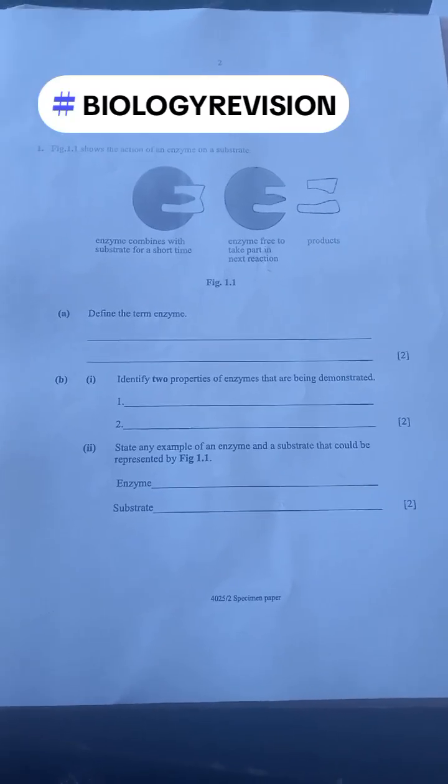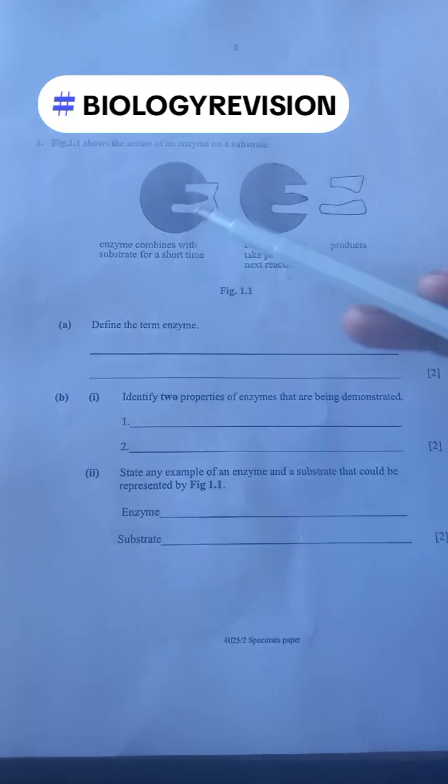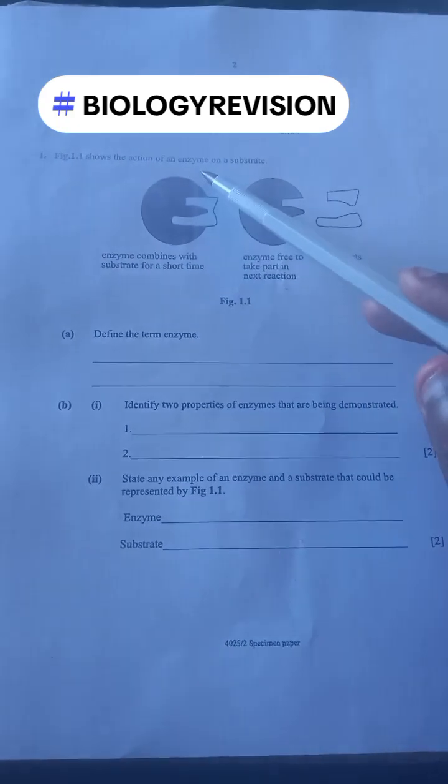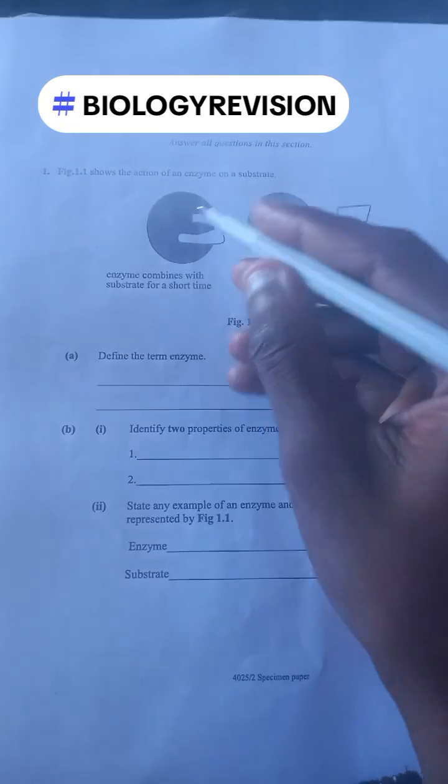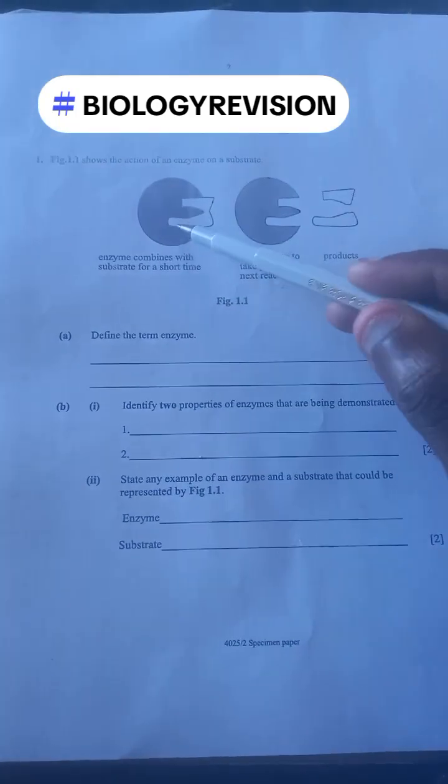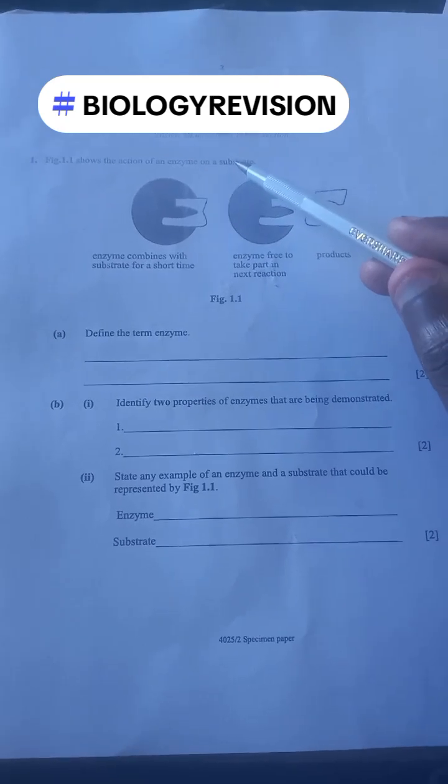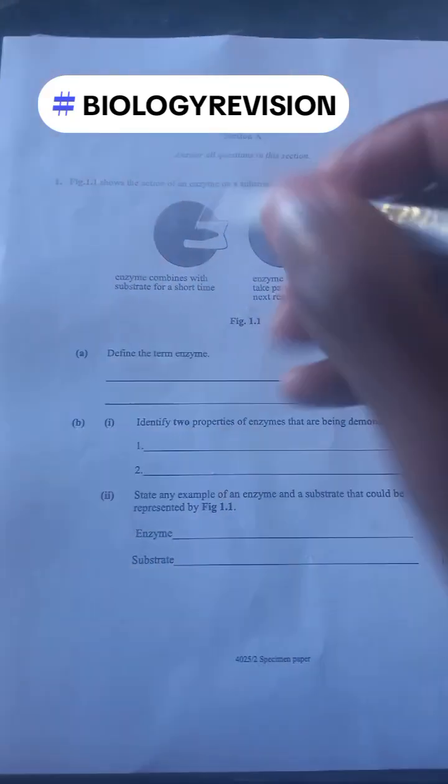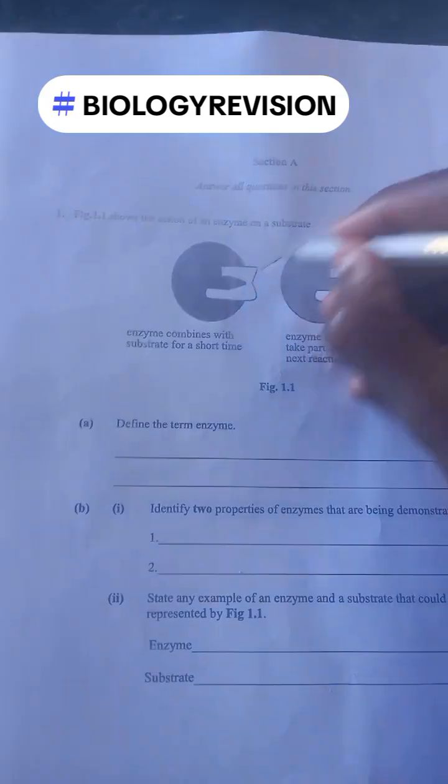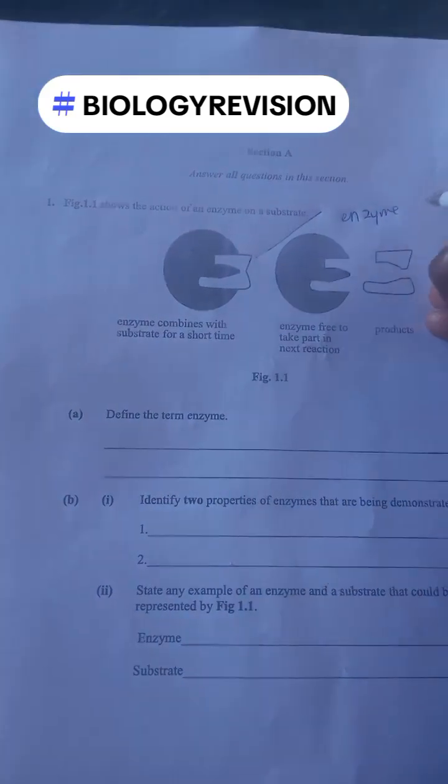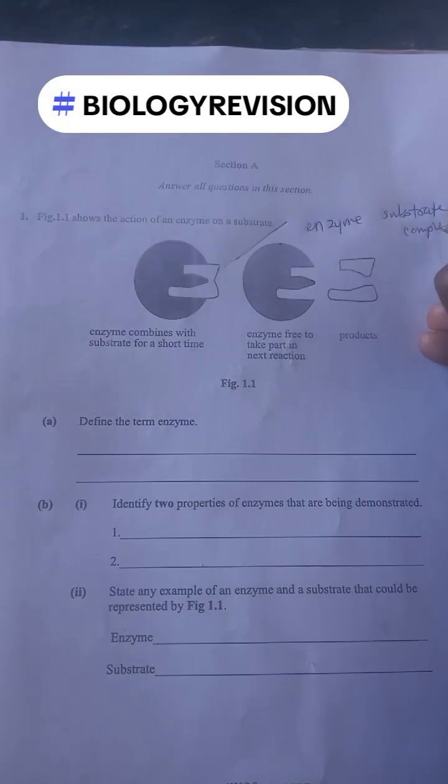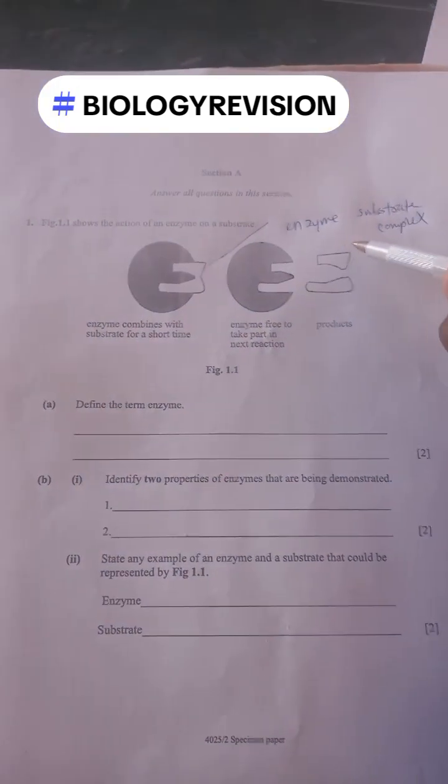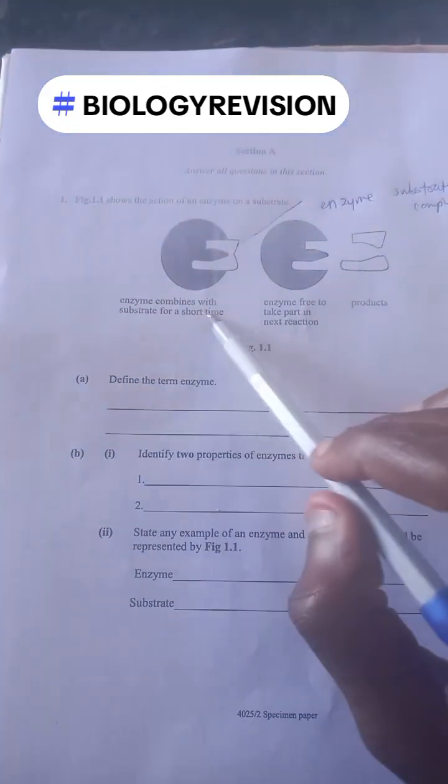So this is the biology questions here. The diagram shows the enzyme acting on a substrate. An enzyme is a biological catalyst that speeds up a chemical reaction, and the substrate is a substance that is being acted on by an enzyme. When an enzyme combines with the substrate, they form what is called an enzyme-substrate complex.